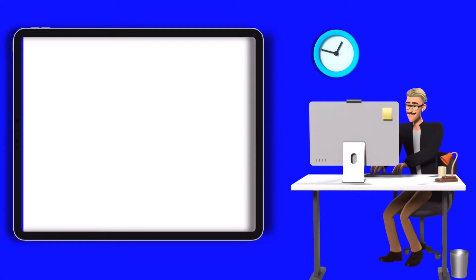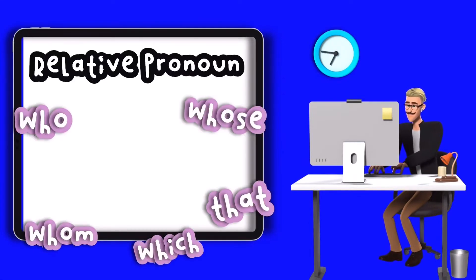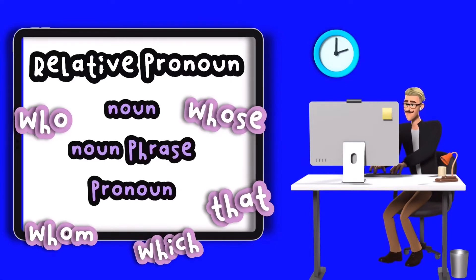A relative clause always begins with a relative pronoun, which substitutes for a noun, a noun phrase, or a pronoun when sentences are combined.